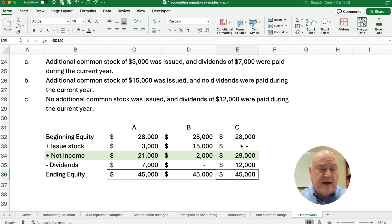This is how you work a problem with beginning equity and ending equity. And you're issuing stock or having additional investment. You have net income or net loss. And you have dividends.